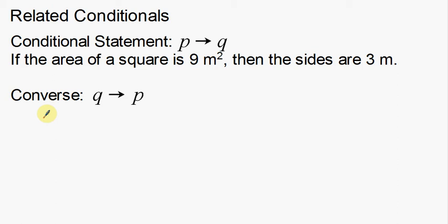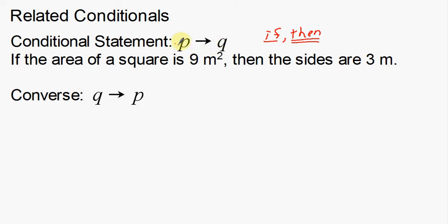A conditional statement is your if-then statement. It has your hypothesis and your conclusion. We have some symbols that help us with this — P then Q. So I have a sentence that goes with this: if the area of a square is 9 meters squared, then the sides are 3 meters.